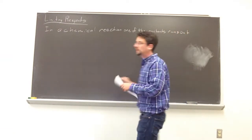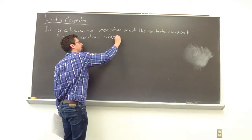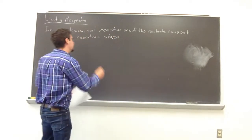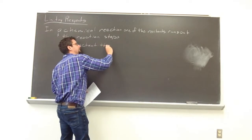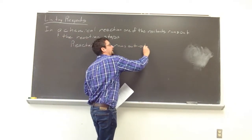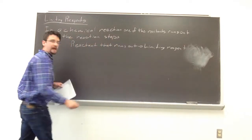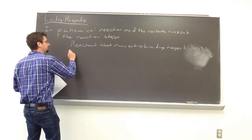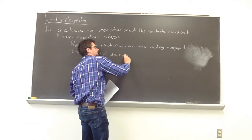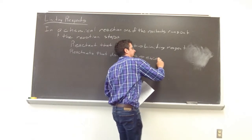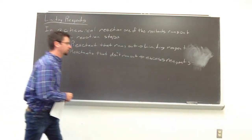In a chemical reaction, eventually one of the reactants runs out and the reaction will stop. The reactant that runs out is what we label as the limiting reagent. The other reactants — the ones that don't run out — those are called excess reagents. Let's take a more practical look with an example.